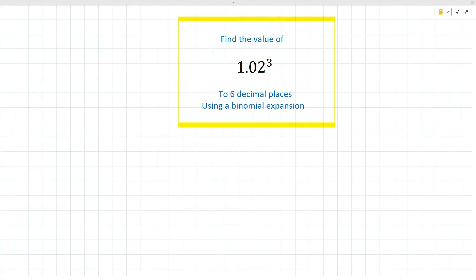Hi, and welcome to the Mathemagic channel. Today we look at how we can find the value of 1.02 cubed to six decimal places using a binomial expansion. Let's try it out.